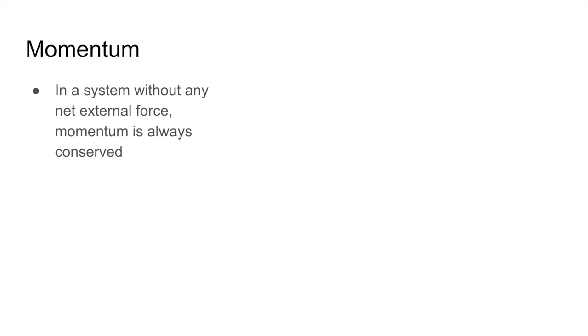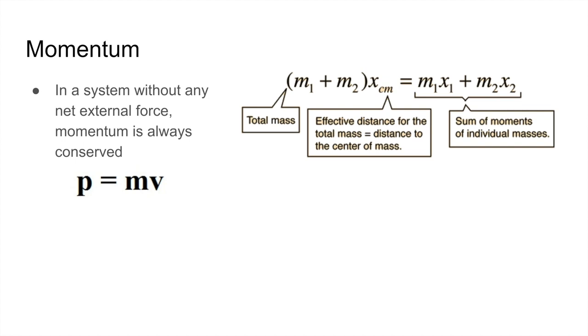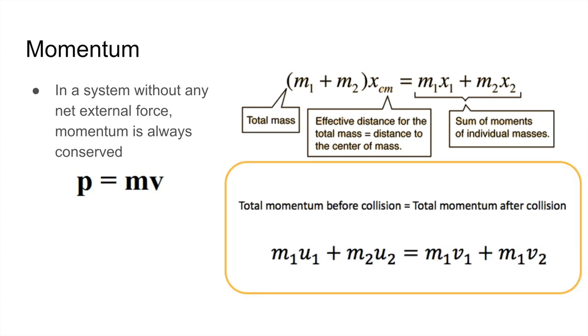Moving on to momentum: in a system with no net external force, momentum is always conserved, where momentum is given by mv. A key concept is the center of mass, given by a weighted sum of positions divided by total mass. When we say momentum is conserved, we mean the velocity of the center of mass is always constant — whatever m₁v₁ + m₂v₂ and so on adds up to, if there's no net external force, the velocity of the center of mass remains the same.